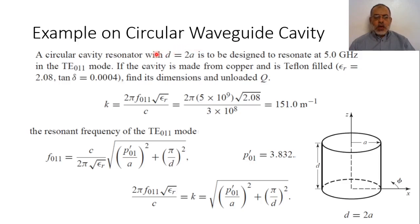A circular cavity resonator with d equals 2a — meaning the length of the cavity equals the diameter of the cavity — is to be designed to resonate at a frequency of 5 gigahertz. The required resonant frequency is 5 gigahertz, operating in the TE011 mode.